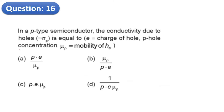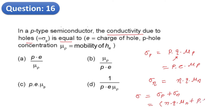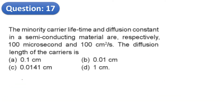Question 16: In a p-type semiconductor, the conductivity due to holes is sigma_p equals p times q times mu_p. Conductivity due to electrons is n times q times mu_n. Total conductivity sigma equals n·q·mu_n plus p·q·mu_p. The correct option is C.